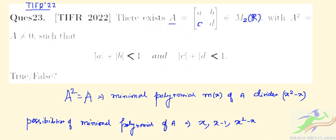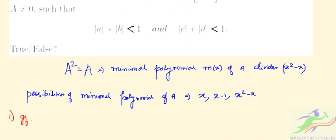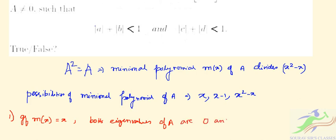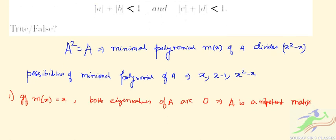Case 1: If the minimal polynomial m(x) = x, then both eigenvalues are 0, meaning A is a nilpotent matrix. In that case A² = 0 implies A = 0, but we are given that A ≠ 0. This is a contradiction.